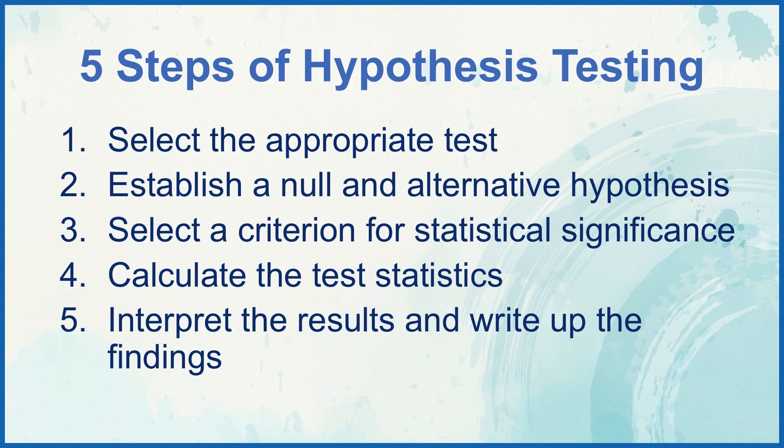Number one is we select the appropriate test, and we'll do that based upon the kind of data that we have. We'll establish a null and alternative hypothesis appropriate to the test that we've chosen, and we'll select a criterion for statistical significance.